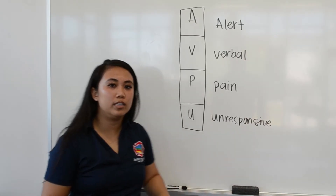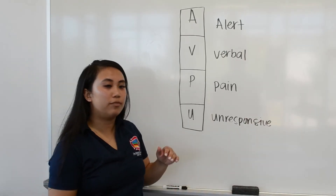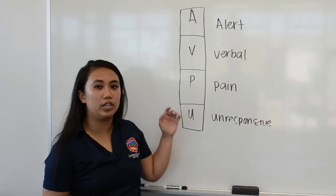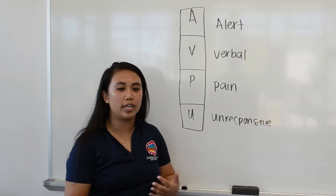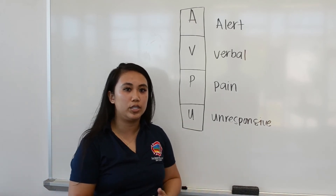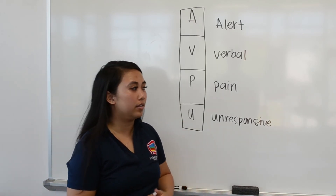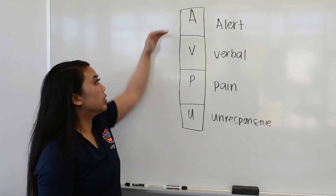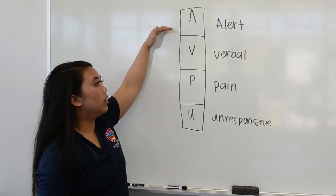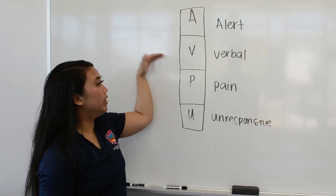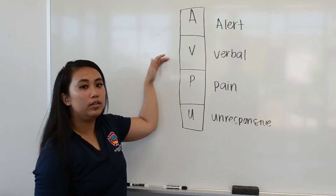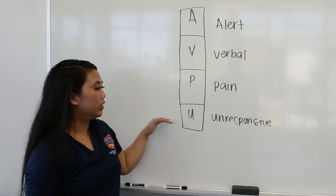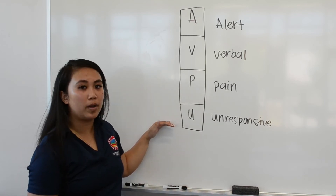This is going to be your AVPU scale. This is something you're going to use when walking up to a patient to quickly assess their responsiveness. A is alert, V is verbal, P is pain, and U is unresponsive.